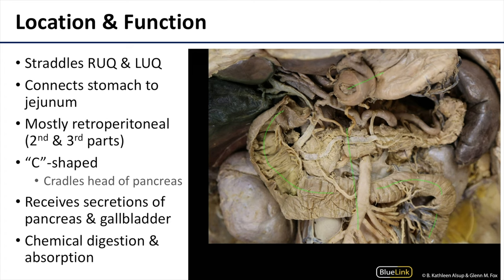There are four parts to the duodenum. The first portion of the first part of the duodenum is intraperitoneal, and the second, third, and fourth parts are retroperitoneal.